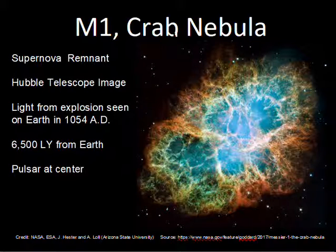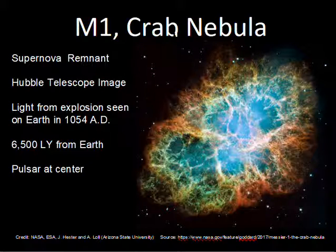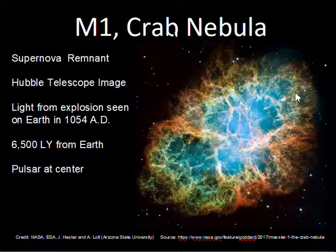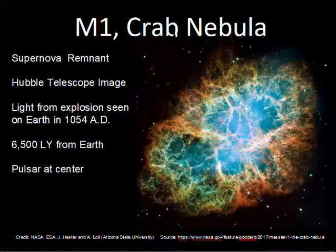The Crab Nebula is visible in telescopes with a smaller diameter, though you won't get the details. The Hubble Telescope produces images showing a lot of turbulence, different material at different locations, different stages of ionization, and different wavelengths of light. This is an amazing object that has been expanding for a little less than 1,000 years and is 6,500 light years from Earth. There is a pulsar at the center of the Crab Nebula — it's a rotating neutron star, and more on that later.